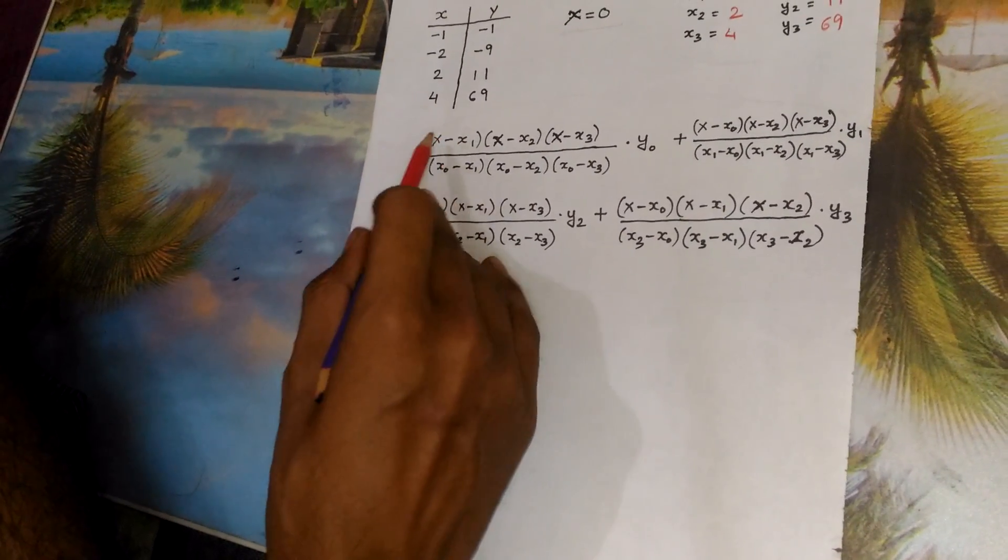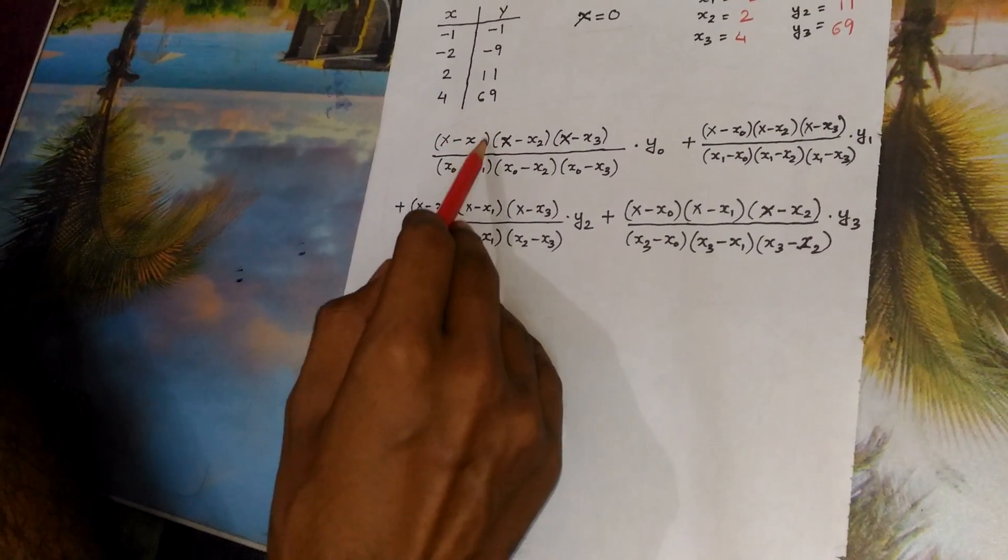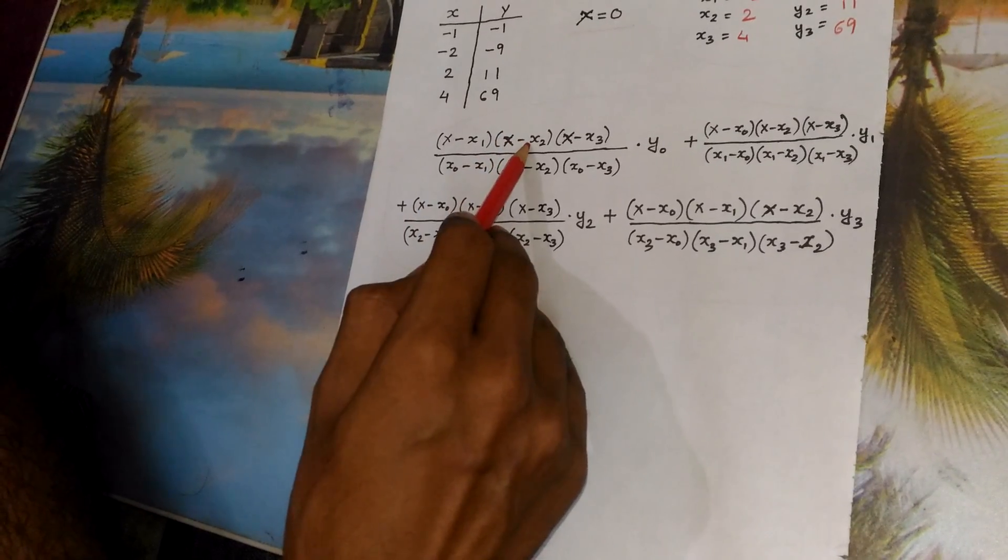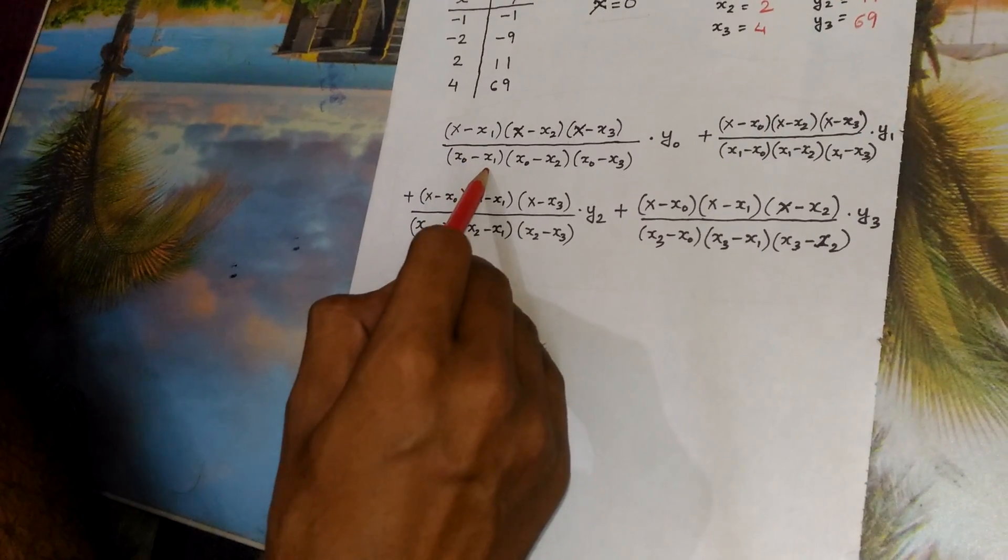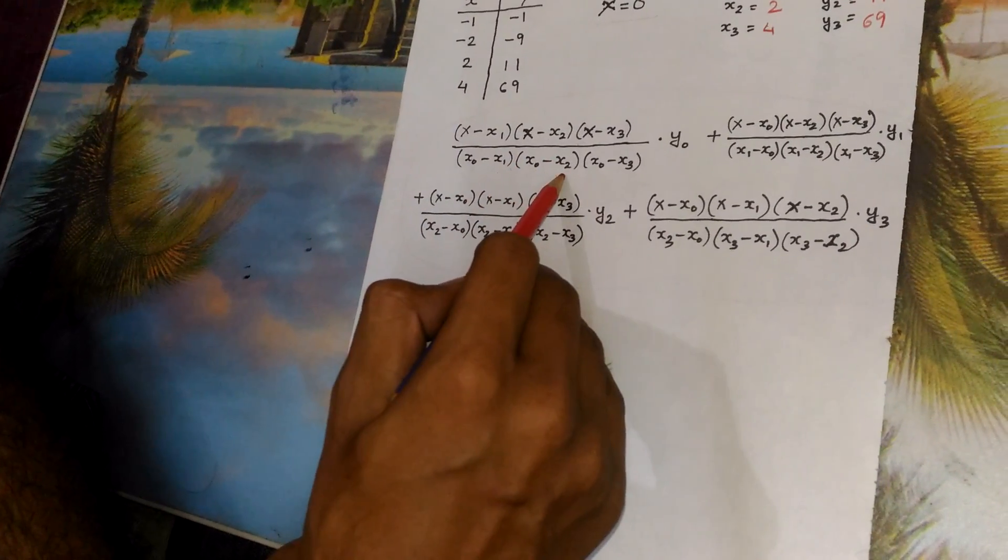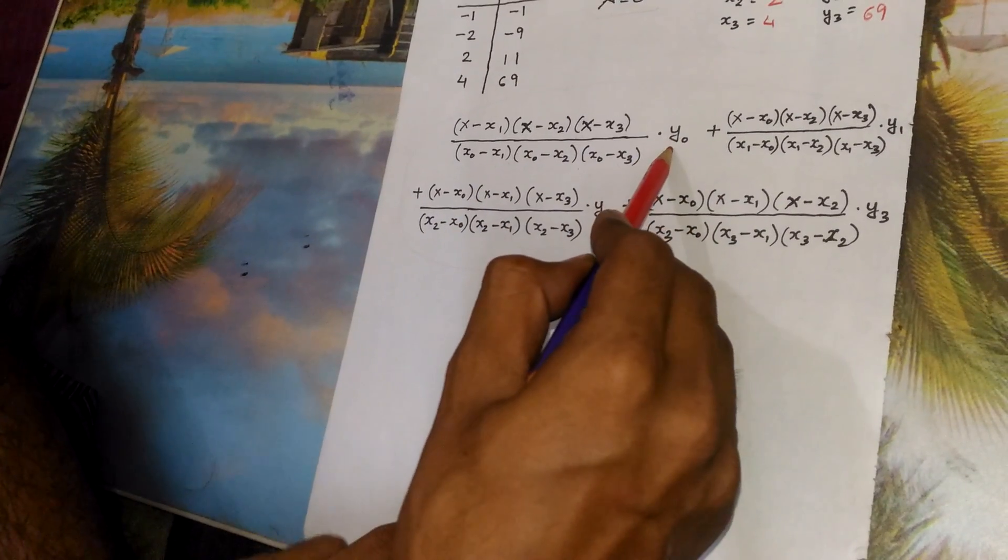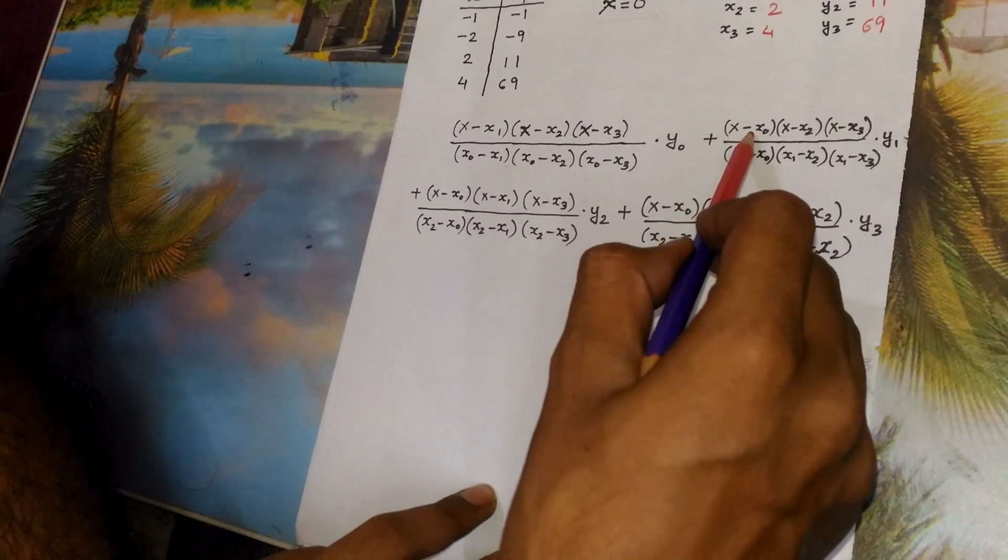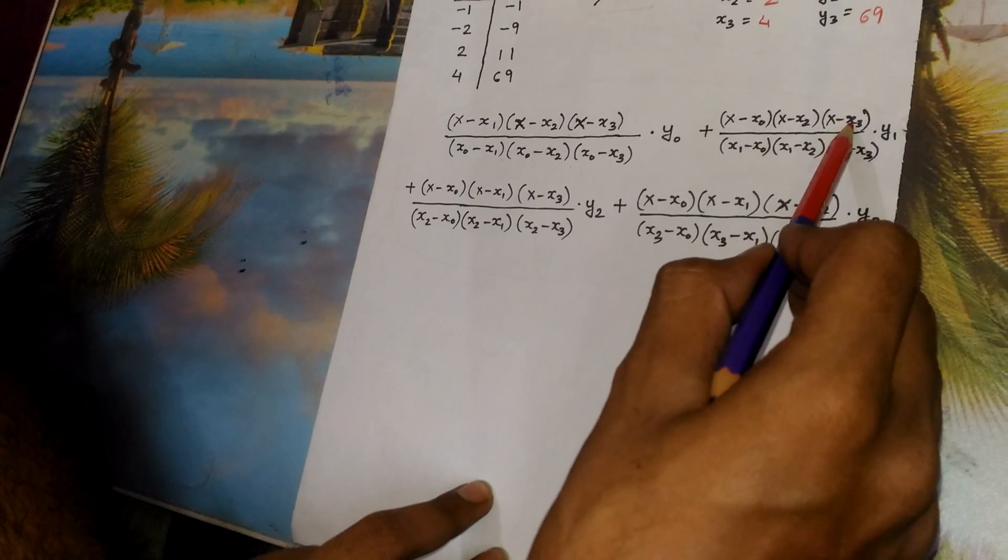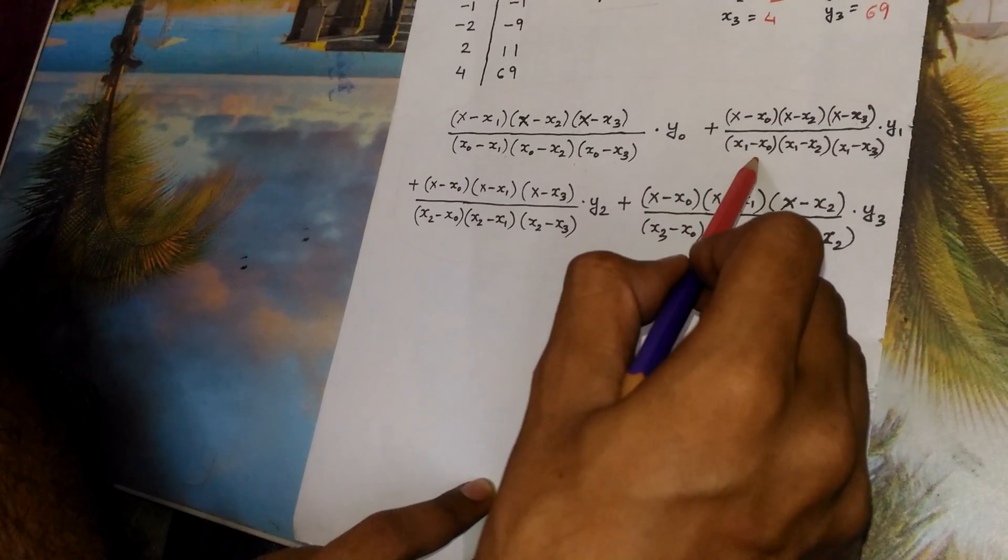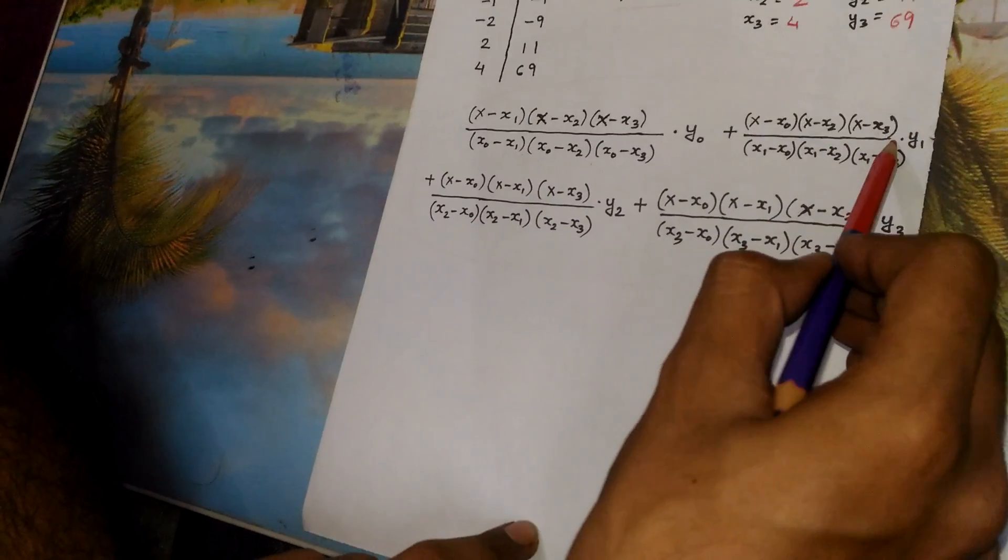Now the formula goes like this: x minus x1, here this x denotes 0. So x minus x1 into x minus x2 into x minus x3 whole divided by x0 minus x1 into x0 minus x2 into x0 minus x3 whole multiplied by y0.